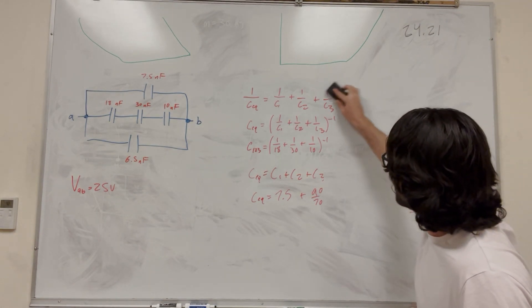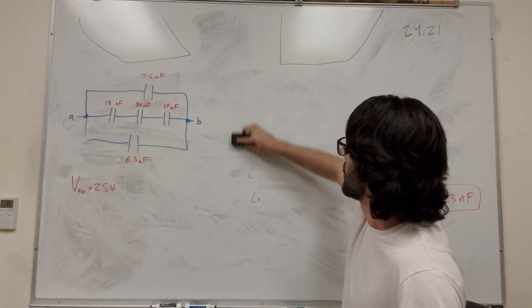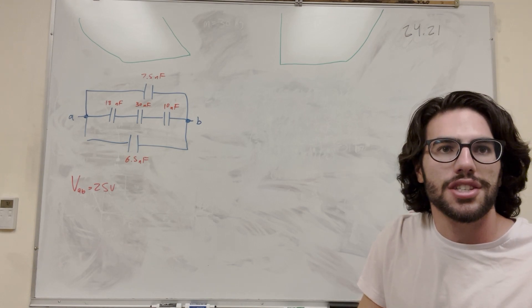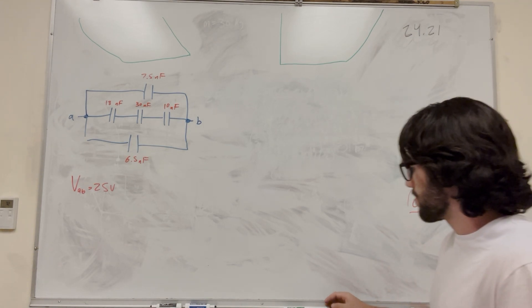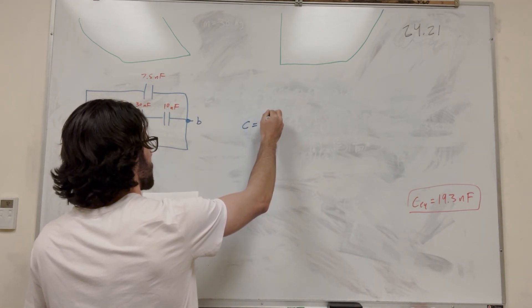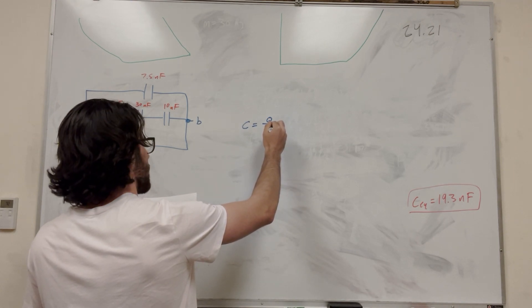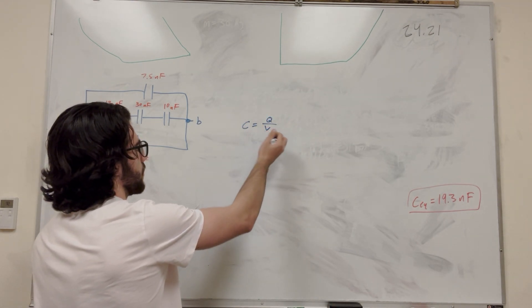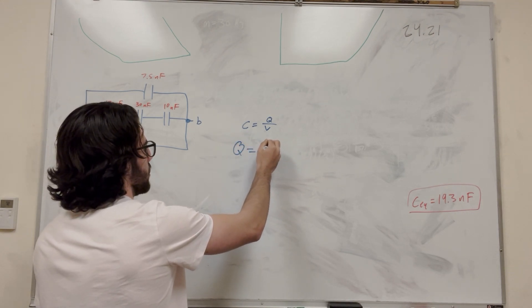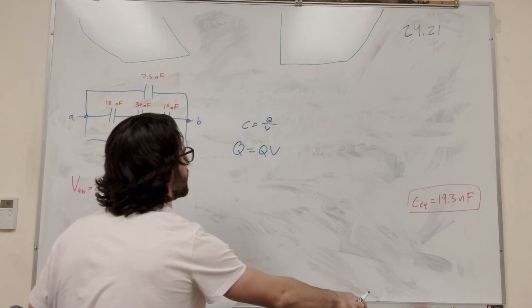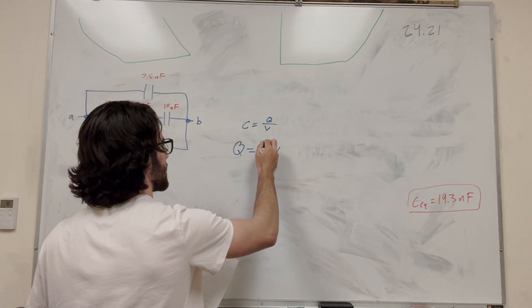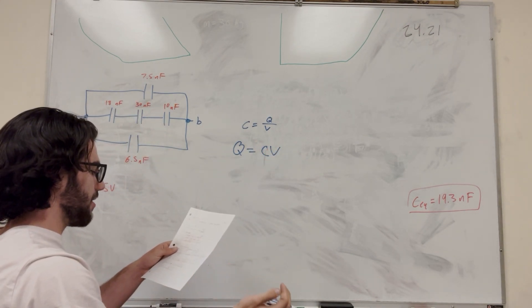Cool. So let's do part B. How much charge is stored in this system? So charge. So what's our equation for charge? So we have this equation. Capacitance is equal to charge over potential. And we're looking for charge, so let's move the voltage over, or potential over. C is equal to Q/V, and we, or not Q/V. Wait, wait, wait. Q is equal to CV is what I meant to say. Q is equal to CV.